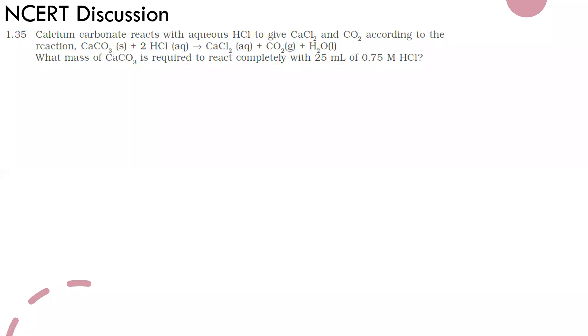Welcome guys. This is the 35th question of the first chapter of NCERT. It asks: if calcium carbonate reacts with aqueous HCl to give CaCl2 and CO2 according to the following equation, what mass of CaCO3 is required to completely react with 25 ml of 0.75 molar HCl?